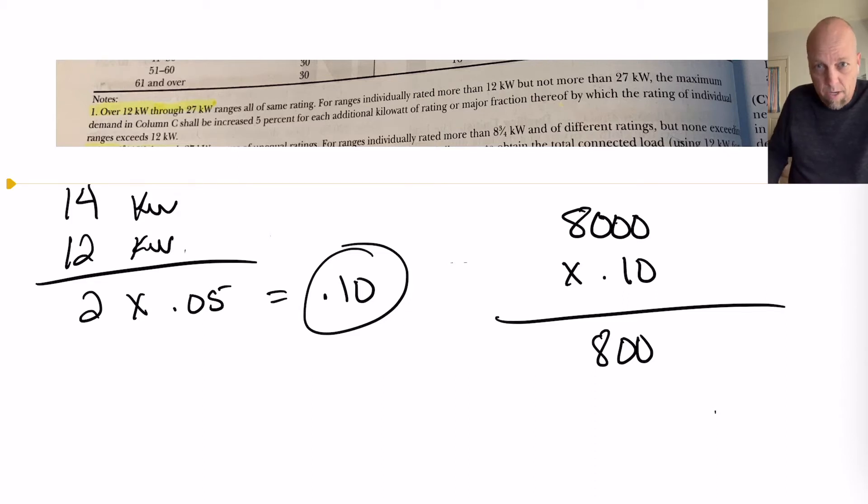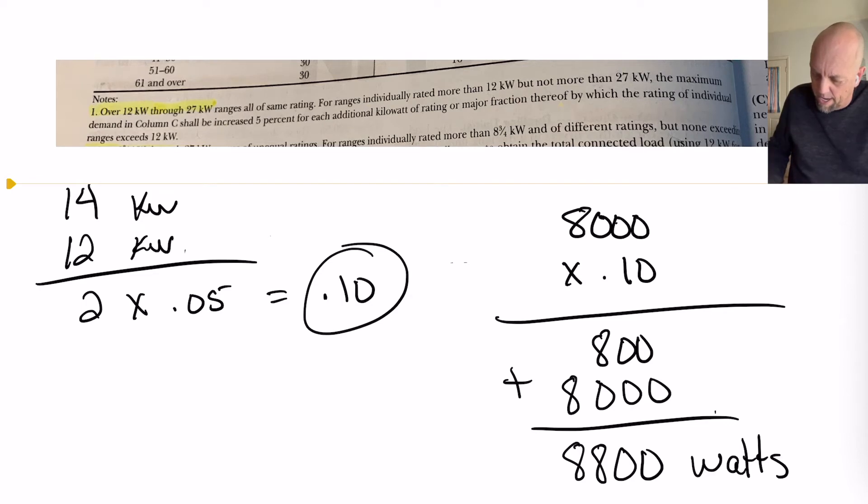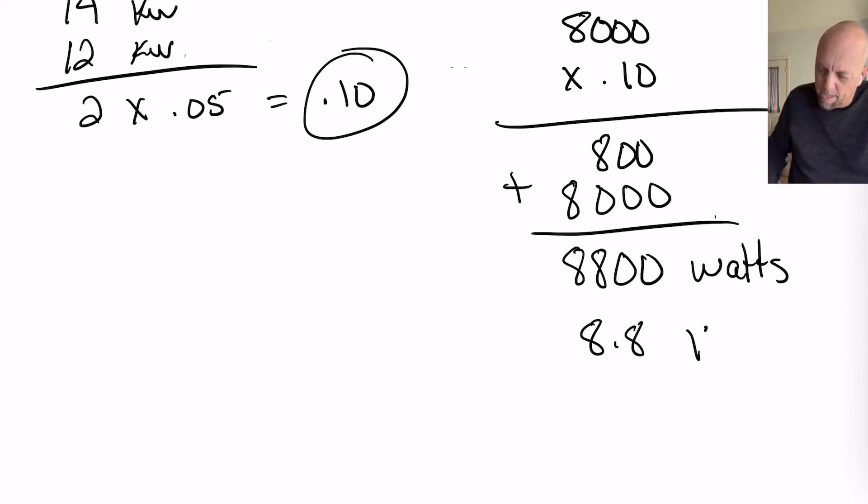So, if you see 800, keep going. Now, we have to add it back to the 8,000. That's an addition. And now you have a range that is 8,800 watts. And if we want to take it back to kW, it will be 8.8 kW.